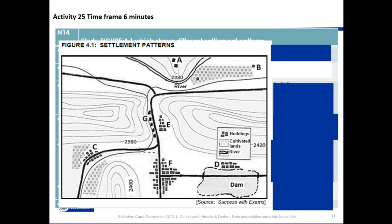Then we go to 4.1.3 C. It says to you why is settlement C referred to as a nucleated settlement? That is a very good comparison because C and B are different: there is one little dot at B, and here there are a whole lot of dots. What does a whole lot of dots indicate? They're all together — that is a nucleated settlement.